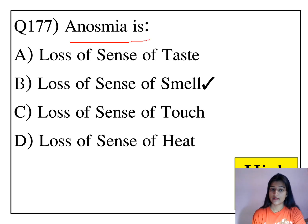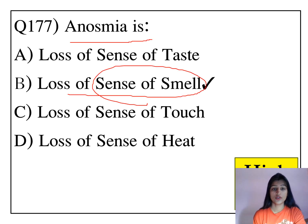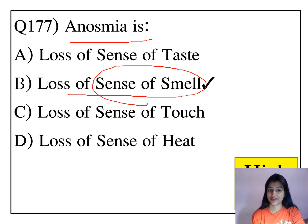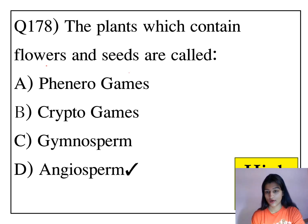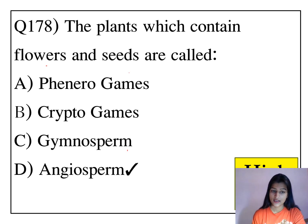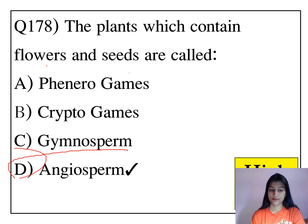Anosmia is the loss of the sense of smell. The plants which contain flowers and seeds are called angiosperms.